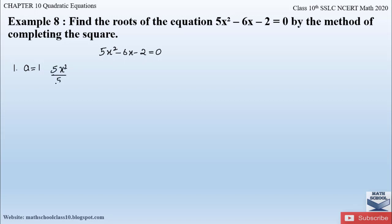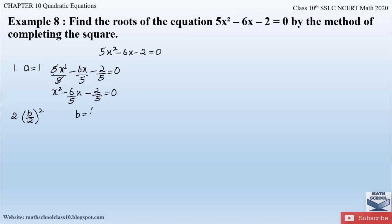Dividing: 5x² divided by 5, minus 6x divided by 5, minus 2 divided by 5 equals 0. The 5s cancel, leaving us with x²-(6/5)x-(2/5)=0. Now, the second step of this method is to take the b term, multiply by 1/2, and square the whole term. Here b = 6/5, so (b/2)² = (3/5)².